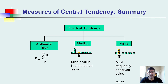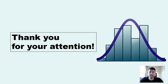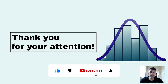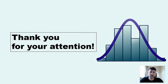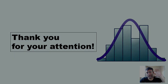We have three central tendency measurements: the arithmetic mean, which we calculated using the formula; the median, the middle value in ordered data; and the mode, the most frequently observed value. These three measurements represent the central points of the data. Thank you for your attention and for watching. Please subscribe to our channel and like our videos to stay updated on new statistics lessons. Thank you very much, bye bye!